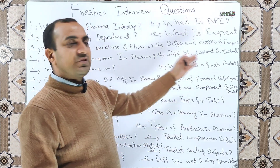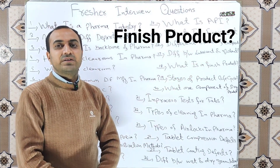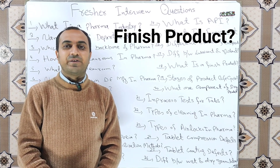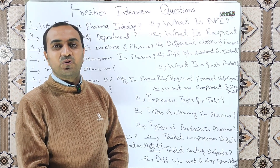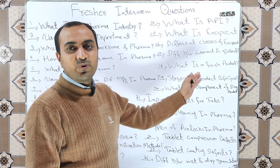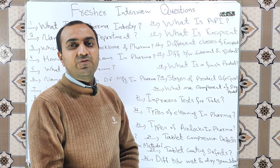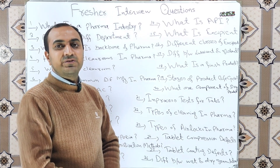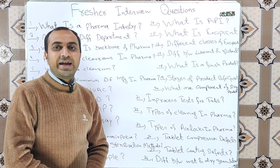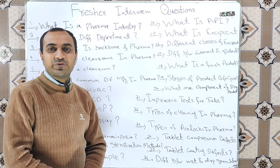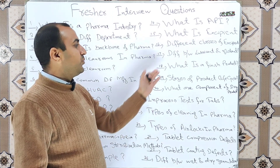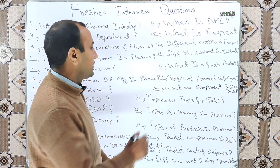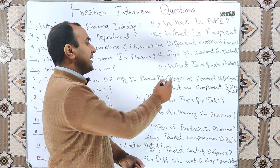What is a finished product? The finalized form of a drug product is known as the finished product. When a drug product completes its manufacturing and packaging process, it is known as the finished product.